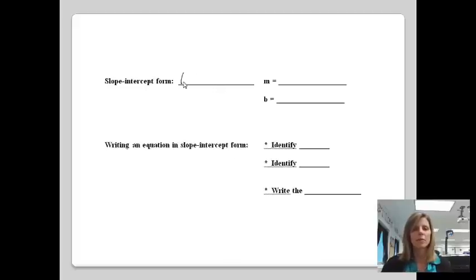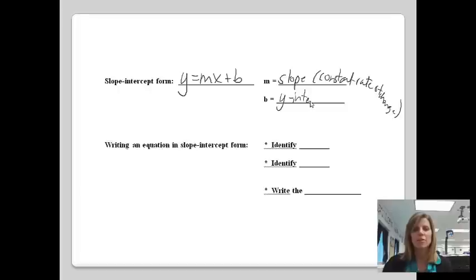Slope-intercept form, hopefully you remember, is just y equals mx plus b. And if you recall, the m stands for the slope, or the constant rate of change that's going on in the problem. So what is the problem going up by or down by? And then b, if you recall, is just the y-intercept. Where does the problem start? When you're writing an equation in slope-intercept form, you pretty much just need to identify the m and identify the b, and then we're just going to write the equation.